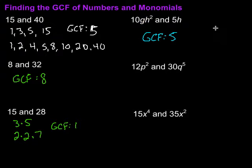Then I'm going to look at my variable parts. Let me just spread them out over here. The 10 times G times H squared is like that, and then we've got that H right there. What do they both have? They both have one H in common. So my greatest common factor is going to be 5H.